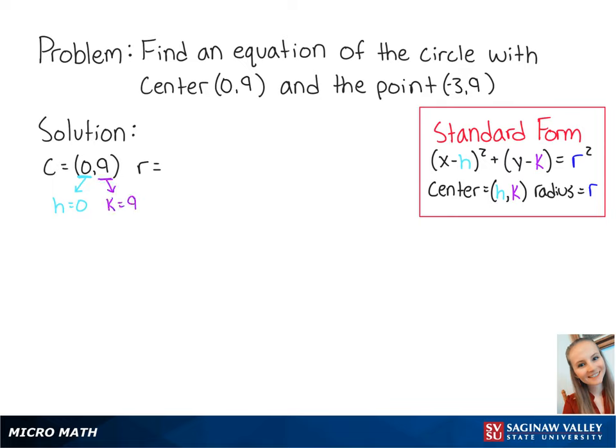Our radius r is equal to the change in x from our center (0, 9) and the given point (-3, 9). So our radius is equal to 0 minus negative 3, which is equal to 3.